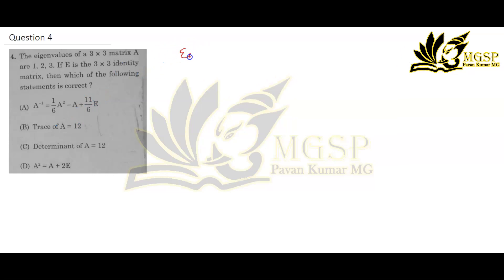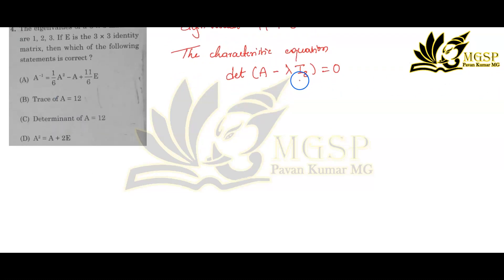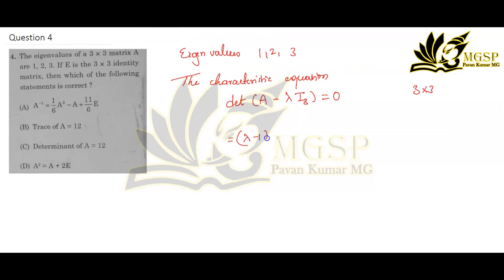We have given eigenvalues as 1, 2, 3 and we know the characteristic equation. The characteristic equation for a matrix is written as determinant of (A minus λ·I₃) equals 0. I have taken I₃ because this is a 3×3 matrix. Now write the characteristic equation: (λ - 1)(λ - 2)(λ - 3) = 0. This is the characteristic equation.